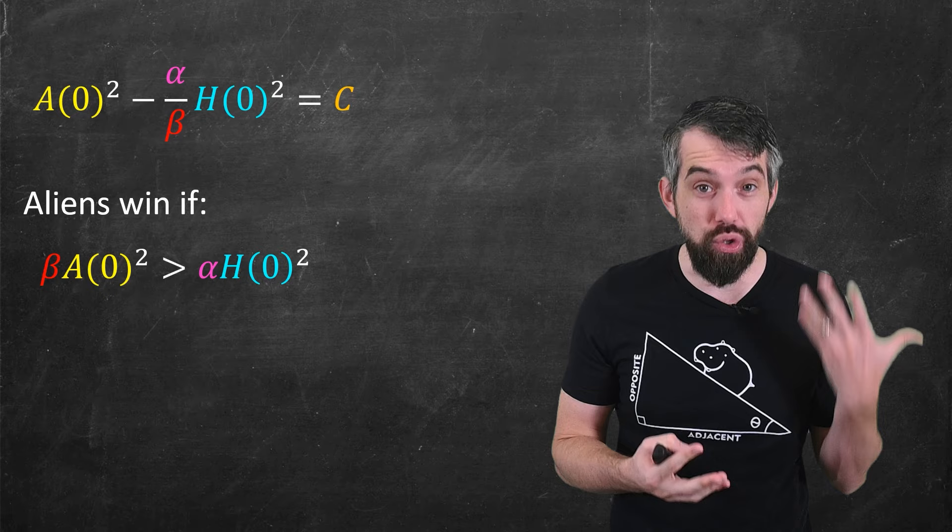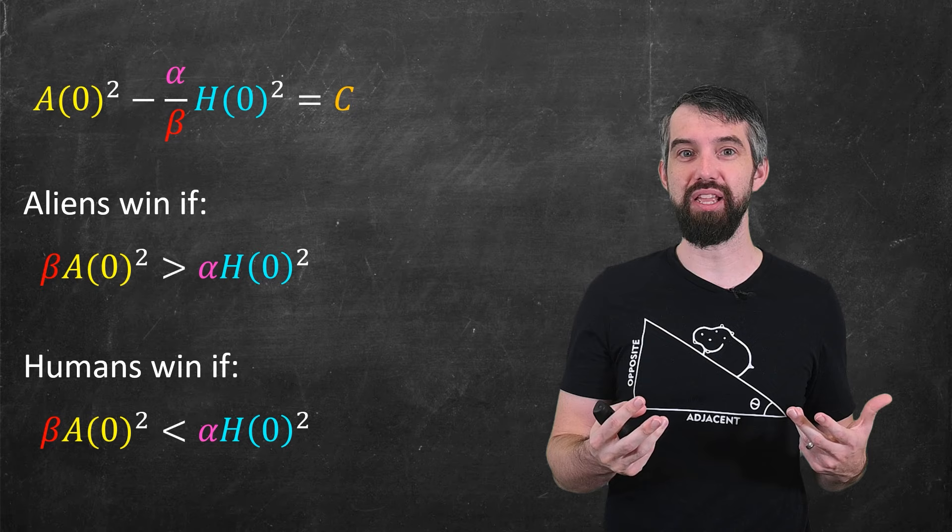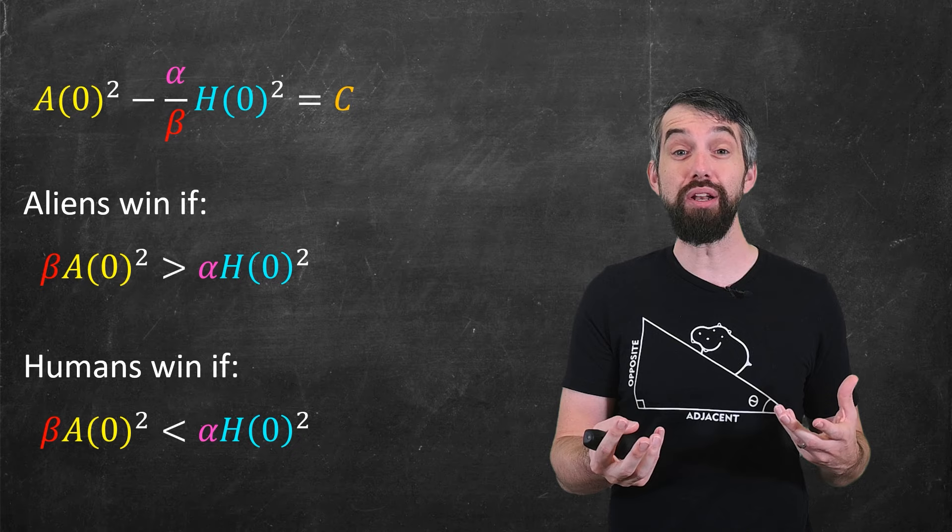And similarly, if I flip the inequalities, the humans are going to win. So ultimately, what we care about is not just the original fighting effectiveness, these constants alpha and beta. And it's not just the initial populations, A naught and H naught.